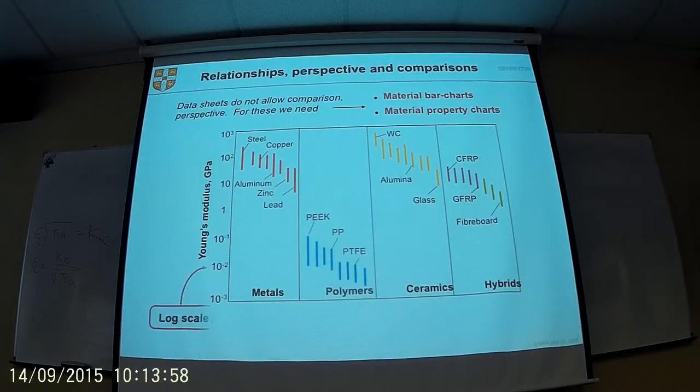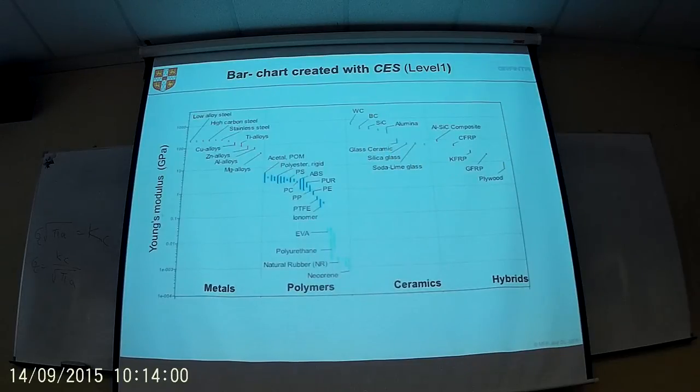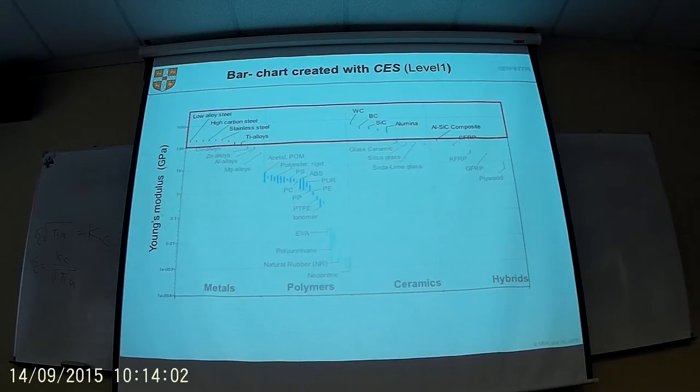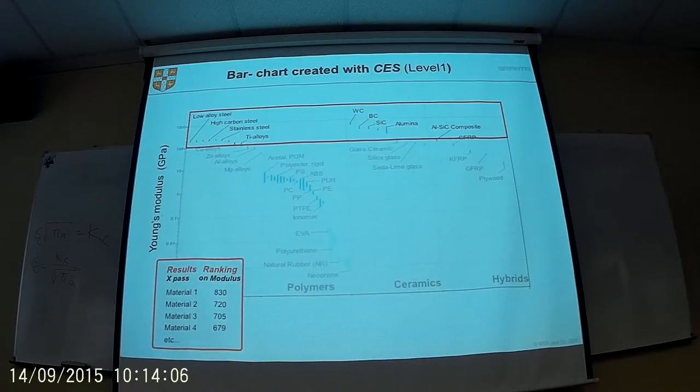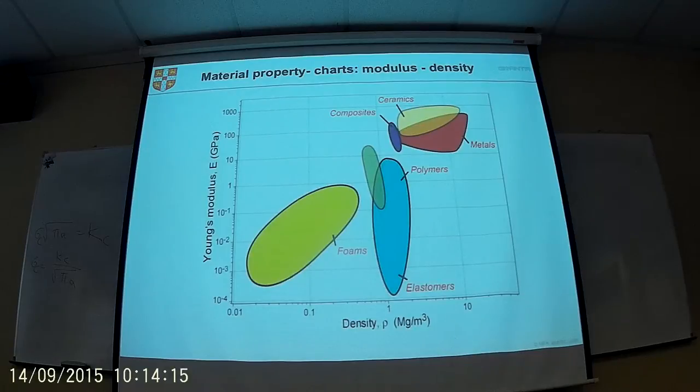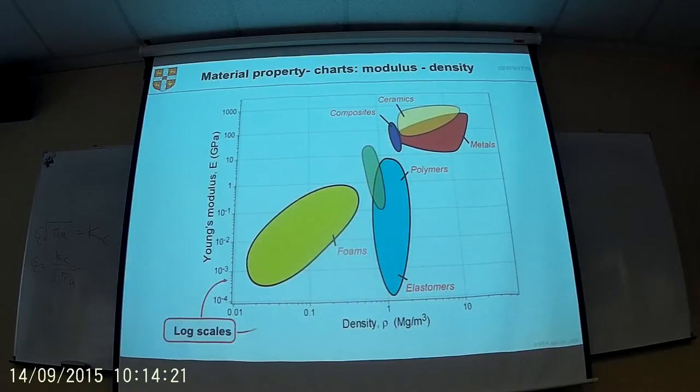Here are all the log scale. You can see the way it's level one, you can actually see how it looks like the result ranking. So I need to show you the ranking in lessons. And this is the modulus versus the density bubble chart.